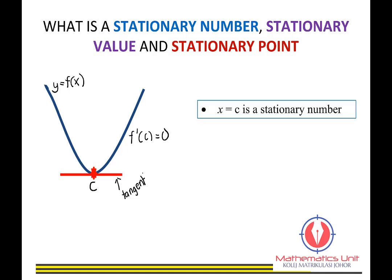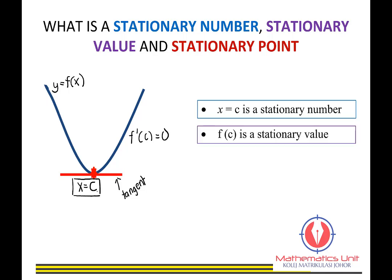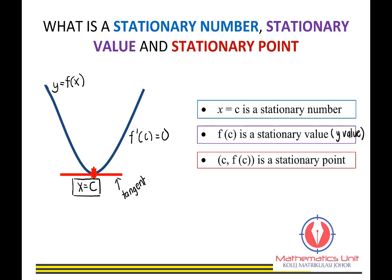When x equals c, that is called the stationary number. The value f(c) is the stationary value — basically the y value corresponding to the x value. The stationary point is expressed in coordinate form as (c, f(c)), representing both the x value and the y value.